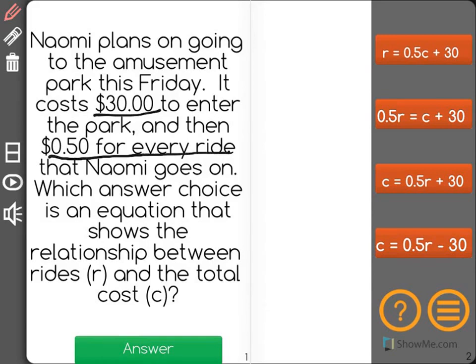Which answer choice is an equation that shows the relationship between rides, R, and the total cost, C?